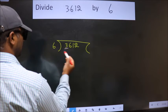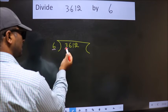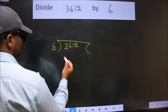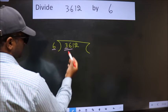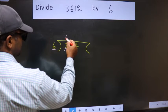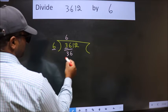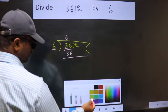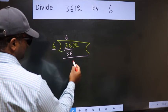Here we have 3. Here 6. 3 is smaller than 6, so we should take 2 numbers: 36. When do we get 36? In the 6 table. 6 times 6 is 36. Now we should subtract. We get 0.